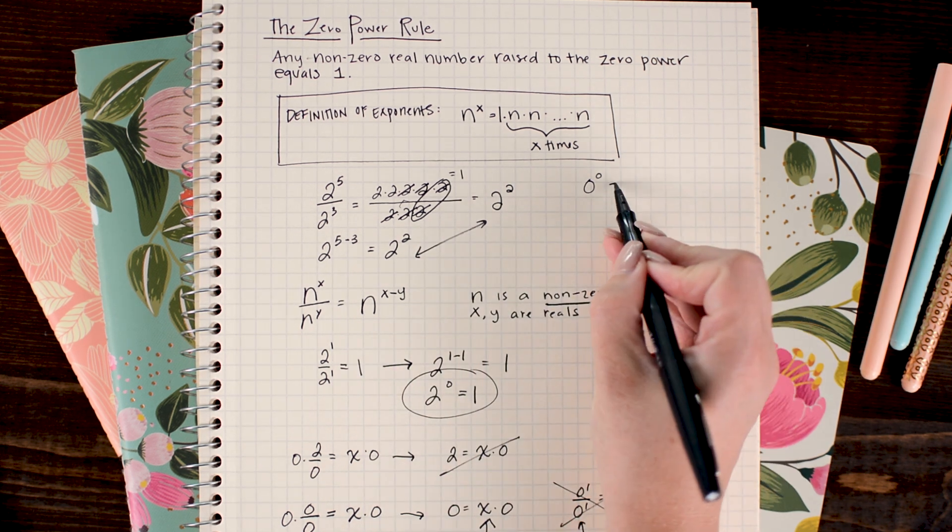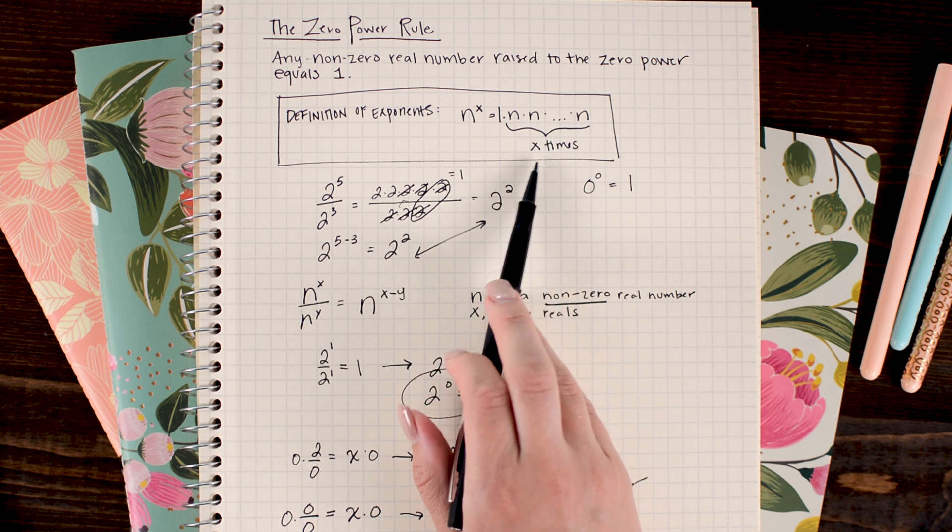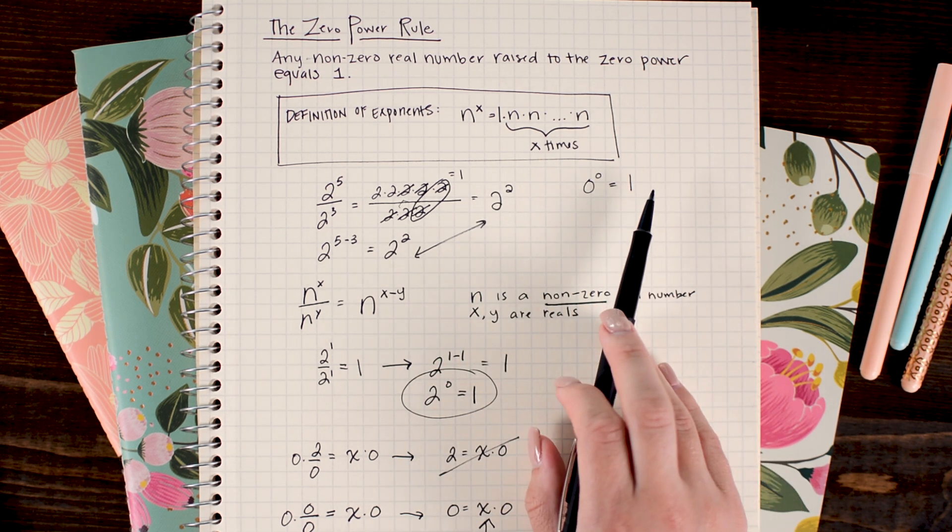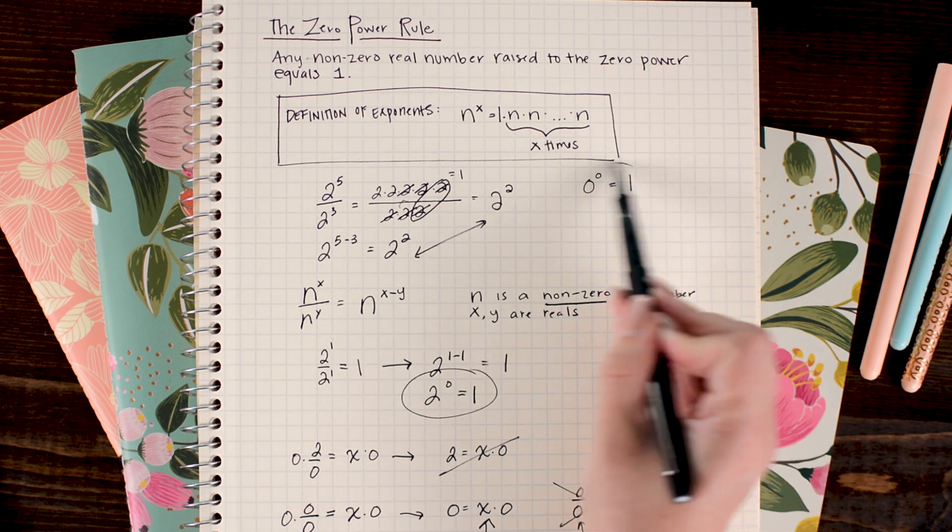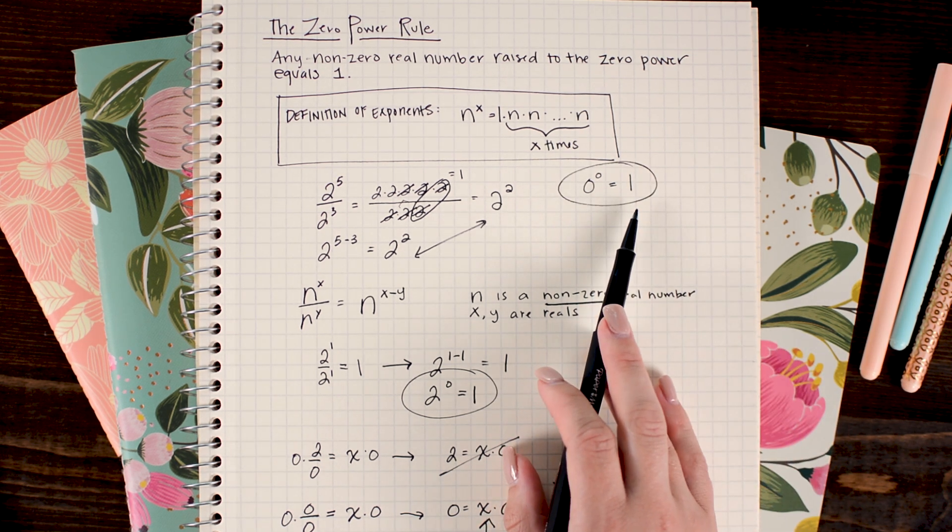But what it allows me to do now is evaluate what 0 to the 0 power is. So if I chose 0 for n and 0 for x, I would have 1 times 0, 0 times. So I'm not going to write anything else down because I'm not multiplying by anything. And that's where you could get the answer that 0 to the 0 power equals 1.